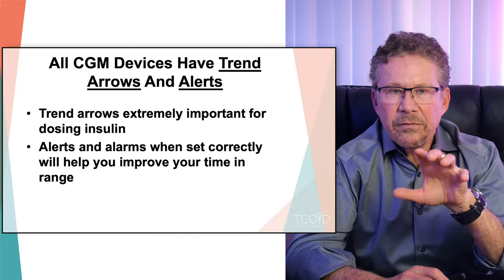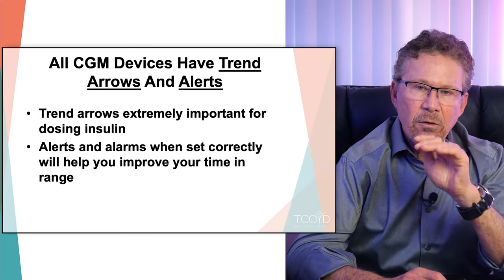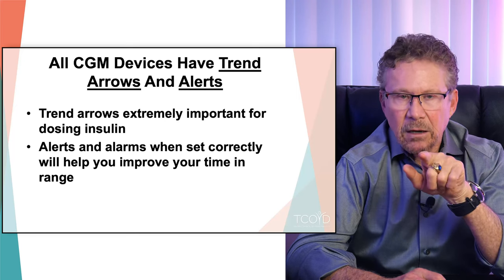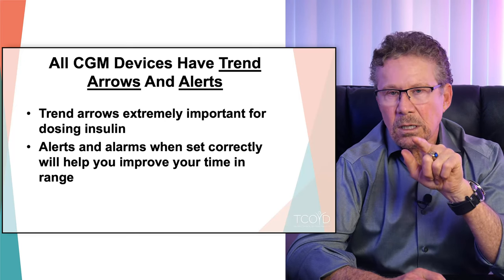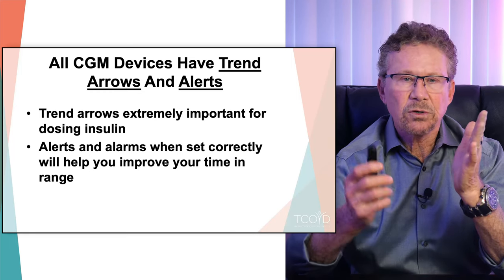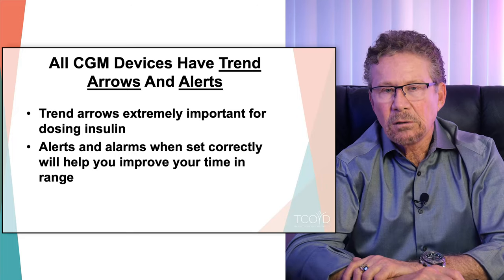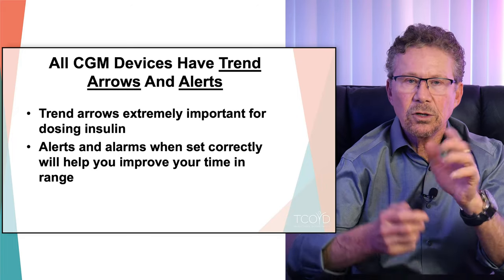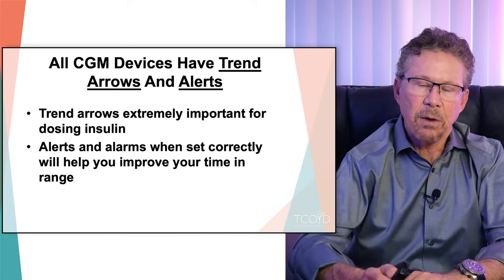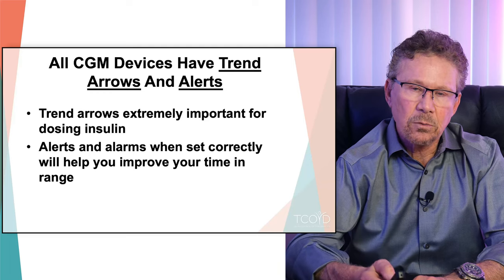All of the devices I showed you have very important trend arrows — I'm going to expand on that because they are so important for insulin dosing. A lot of people don't use their trend arrows to adjust their dose of insulin. And the alerts and alarms, if you set them correctly, can really improve your time in range. I'm going to show you my technique, what I've been telling my patients, and I guarantee you it works.